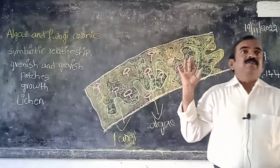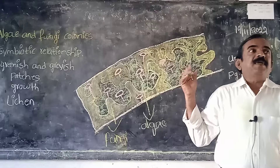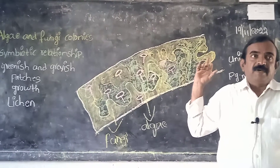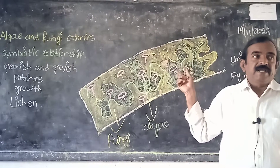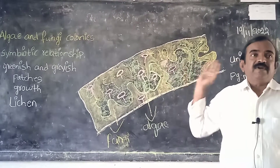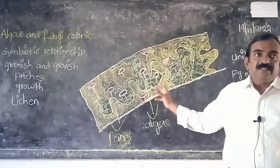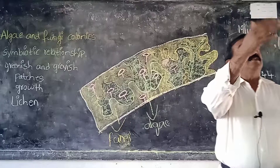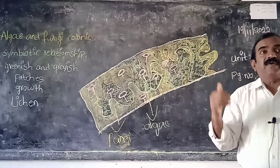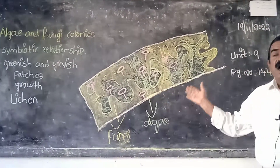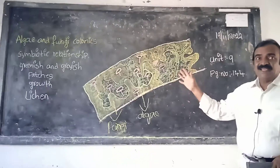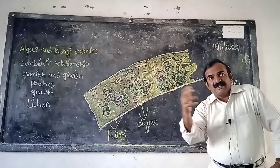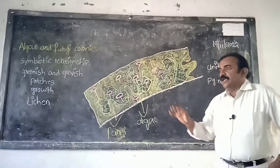This is from Unit 9, Adaptations in Different Ecosystems, page number 144. This diagram is telling us that there is a close relationship between algae and fungi.